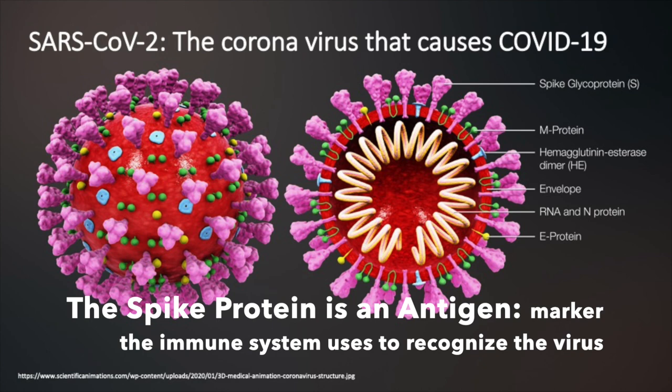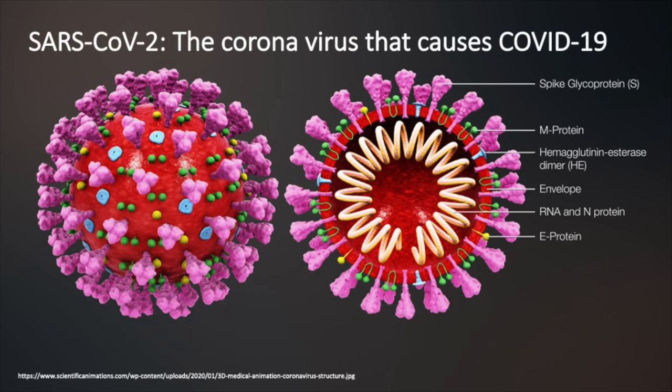An antigen is a molecule that the immune system uses to form a memory of a specific infection. Although there are other coronaviruses that infect humans, the spike protein of the novel coronavirus has a different shape than the spike proteins of other coronaviruses, so our immune systems are not prepared to defend against this new virus. When the virus gets in our body, the spike protein tricks our cells into letting the virus inside. Once inside of our cells, the virus can make copies of itself and wreak havoc on our bodies as it continues to spread.